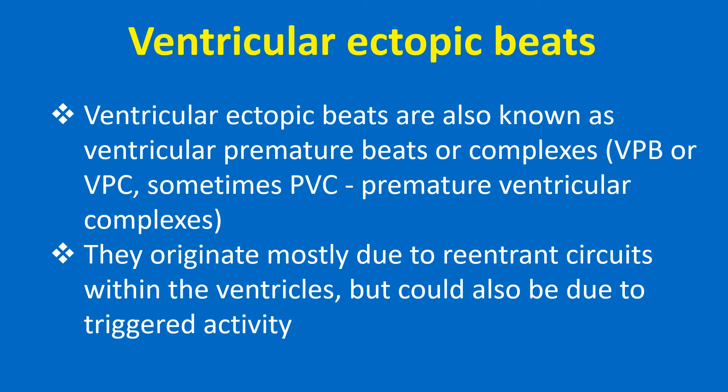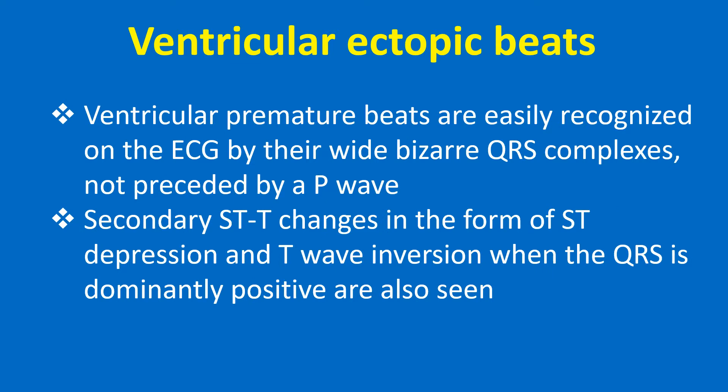They originate mostly due to reentrant circuits within the ventricles but could also be due to triggered activity. Ventricular premature beats are easily recognized on the ECG by their wide, bizarre QRS complexes not preceded by a P wave.